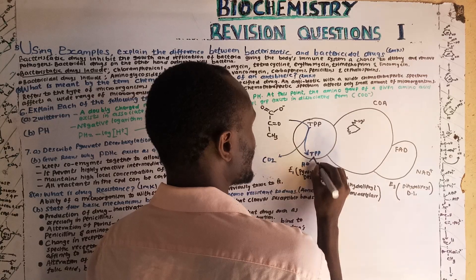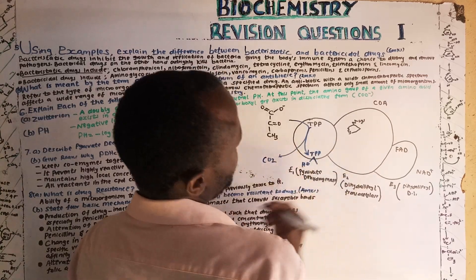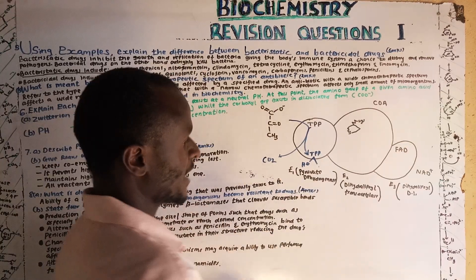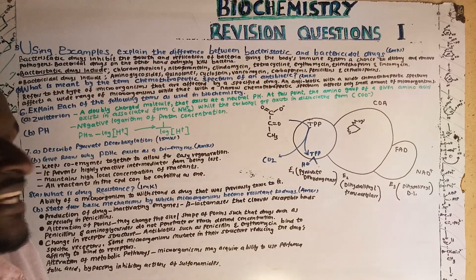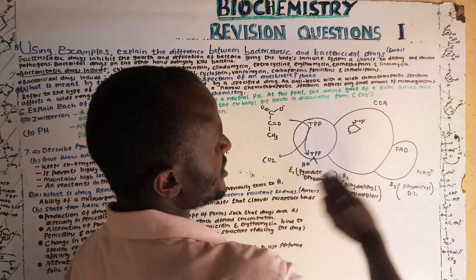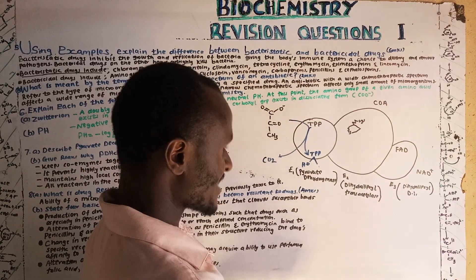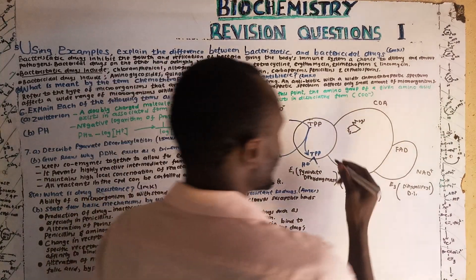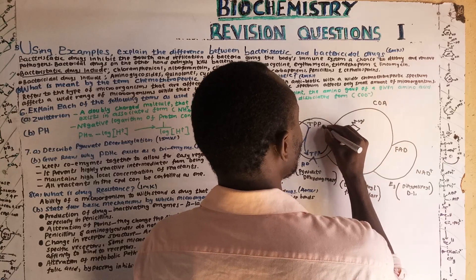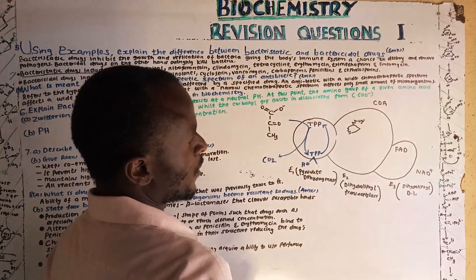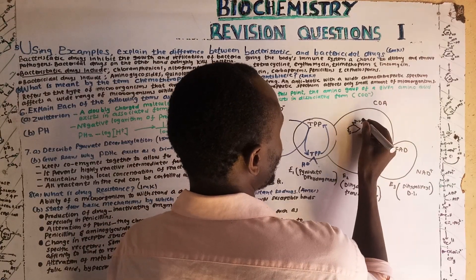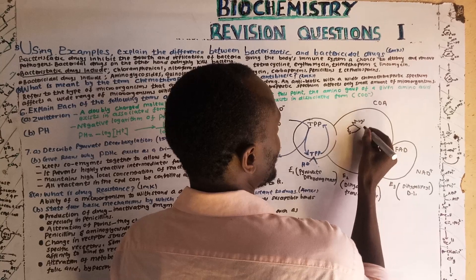Hydroxyethyl-TPP then swings to E2, where it interacts with lipoic acid, and regenerates thiamine pyrophosphate back to its original state. During the interaction of hydroxyethyl-TPP with lipoic acid, one of the sulfur atoms of the lipoic acid gets attached to the acetate group of the remaining residue while the other gets reduced.